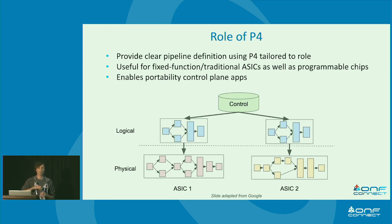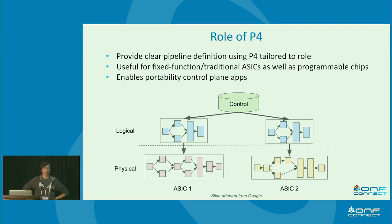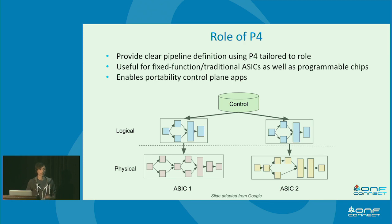Let's first recap what's the role of P4 in today's world. P4 provides a clear pipeline definition, compared to OpenFlow which does not have a clear pipeline definition, and it's an improvement upon this. It can be useful for fixed function and traditional ASICs like programmable ASICs like the Tofino. It's an abstraction of the actual physical pipeline — for example, we have two different ASICs but they're controlled by the same logical P4 program. That's the main benefit. It also enables portability of control plane apps, and that's a benefit compared to OpenFlow where we have vendor-specific APIs — all this goes away with P4.